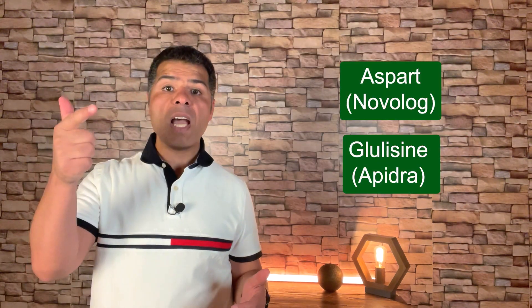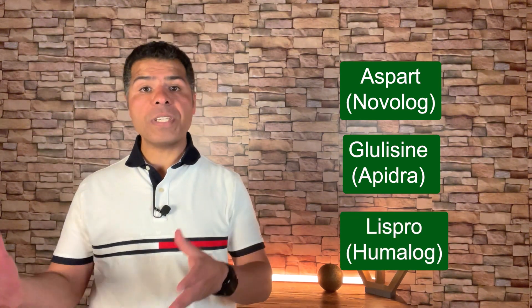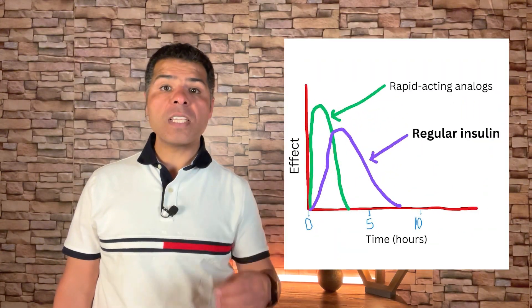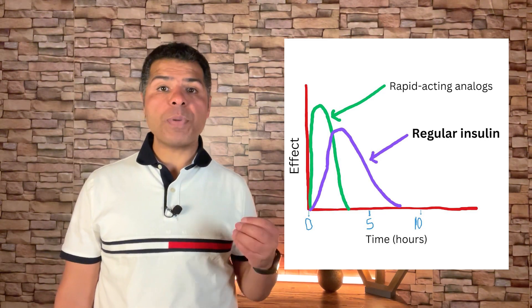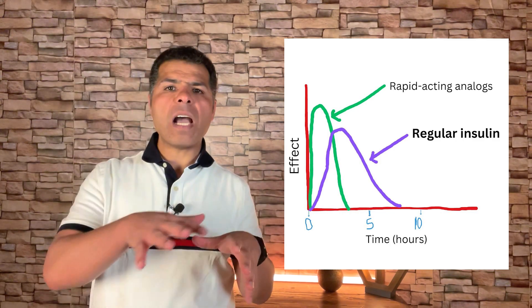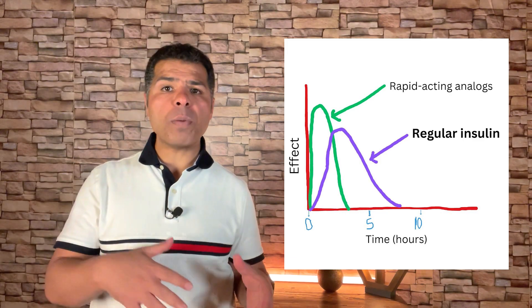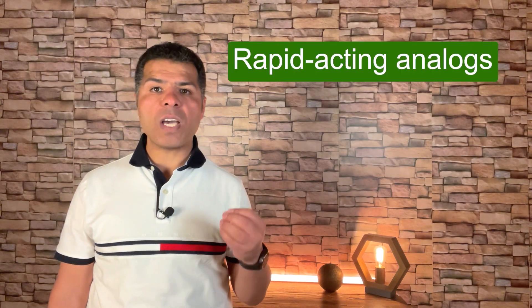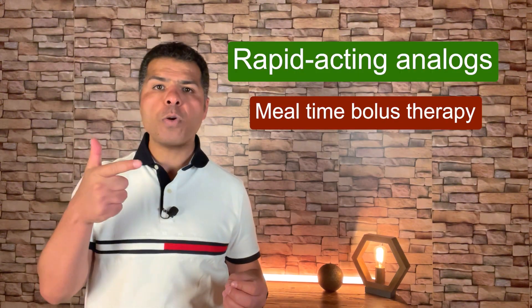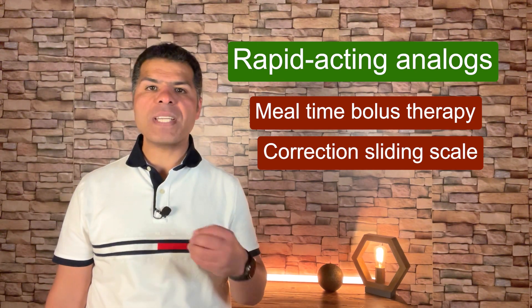Insulin analogues — Aspart (brand name Novolog), Glulisine (brand name Apidra), and Lispro (brand name Humalog) — are only given subcutaneously. They enter the bloodstream within minutes, so inject them within 5 to 10 minutes of eating. They have a peak action of 1 to 2 hours and fade completely after about 4 hours; higher doses may last slightly longer but no more than 5 to 6 hours. In clinical practice, rapid-acting analogues are used for mealtime bolus therapy and correction sliding scale — use them over regular human insulin if IV therapy is not required.